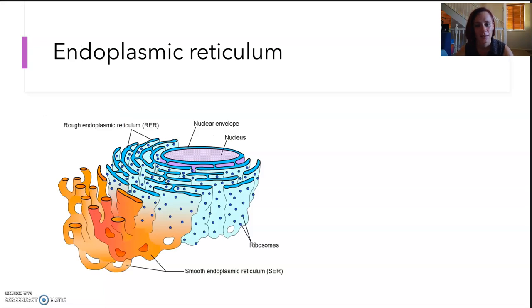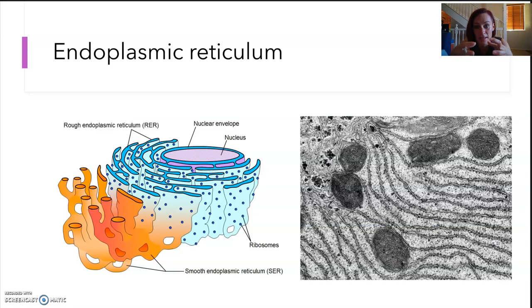The endoplasmic reticulum, it's kind of a continuation of the membrane that circumnavigates or surrounds the nucleus, and what it does is it synthesizes proteins. The ribosomes that are attached, another little organelle, produce proteins, which is an organic molecule, and the endoplasmic reticulum can fold, modify, and transport these proteins around the cell where they're needed.